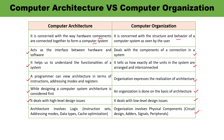Organization involves physical components, because here we are talking about interconnection — how units are interconnected and arranged. This means circuit design, adders, signals, and peripherals are all related to computer organization. I hope now you are able to clearly differentiate between computer architecture and computer organization.